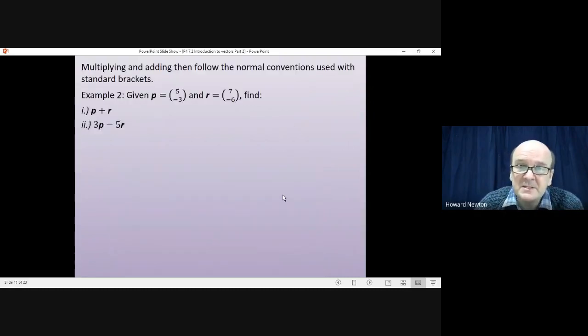Multiplying and adding vectors follow exactly the normal conventions that you use with normal brackets. So given that the vector p was equal to 5 minus 3, and the vector r equals 7 minus 6, have a go yourself at working out what p plus r is, and what 3p minus 5r is. And you just treat these like you would do normal brackets, using the normal algebraic rules. I'll let you have a go at working this out yourself, pause the video, and then come back to me when you're ready.